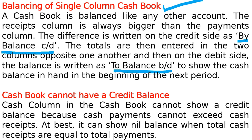At the end of the month, we write 'by balance c/d' on the credit side. For example, if on 31st January 2019 the balance is 5 rupees, then on 1st February 2019 on the debit side we write 'to balance b/d', because it is a debit balance, to show the cash balance in hand at the beginning of the next period.